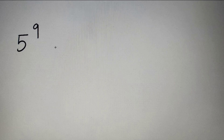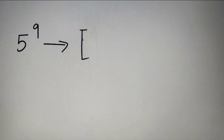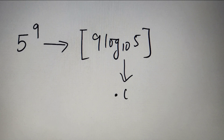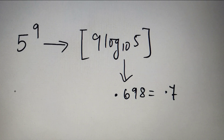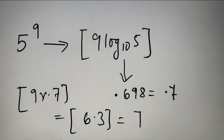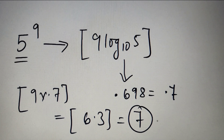We are given that we have to find out the number of digits of 5 raised to the power 9. So according to the formula, the value will be the greatest integer value of 9·log 5, base 10. Now we know that the value of log 5 base 10 is equal to 0.698, so we can consider it to be 0.7. So we calculate the greatest integer value of 9 × 0.7, which is equal to the greatest integer value of 6.3, which is equal to 7. So the number of digits of 5 raised to the power 9 is equal to 7.